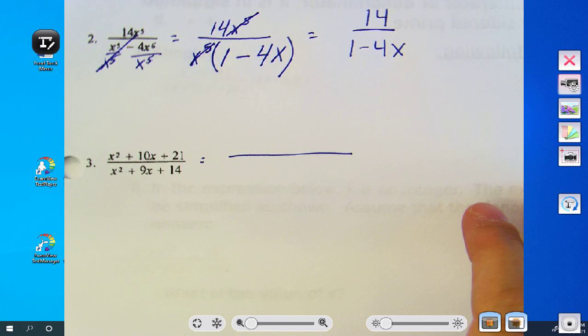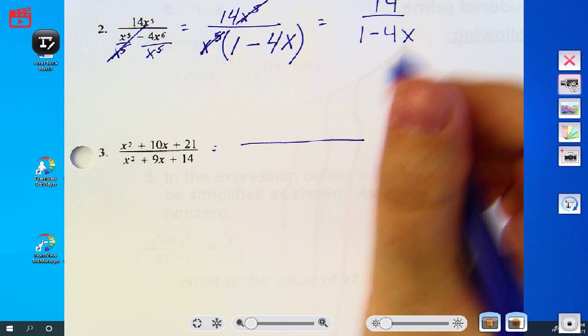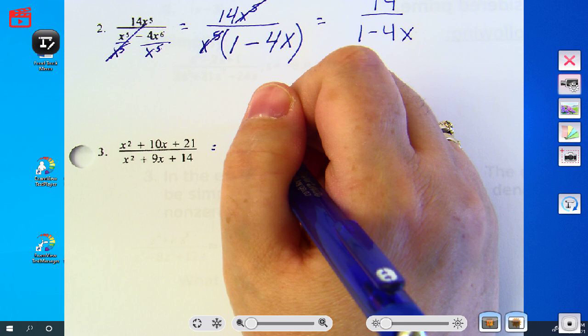Okay, there's no GCF, but you can find factors of 21 to add up to 10. What did you find? What did you find? Seven and three. Seven and three.